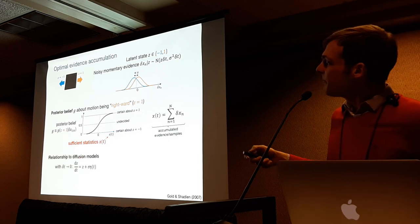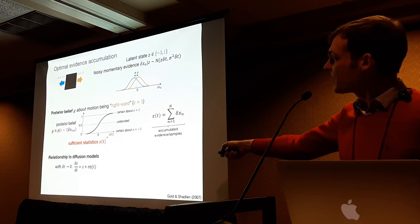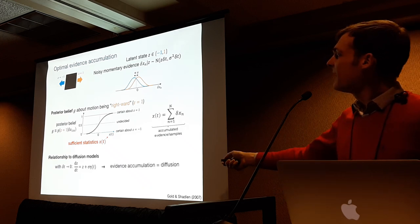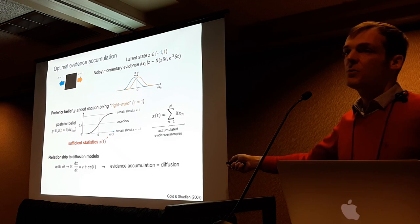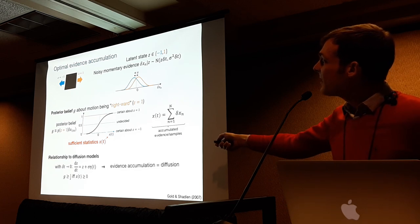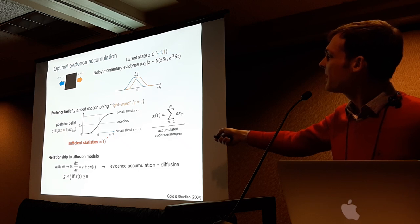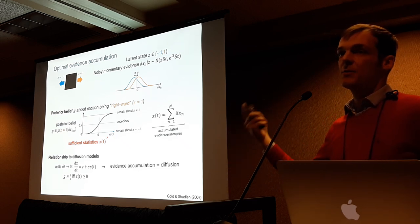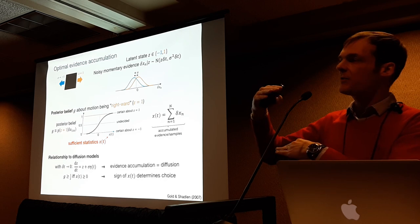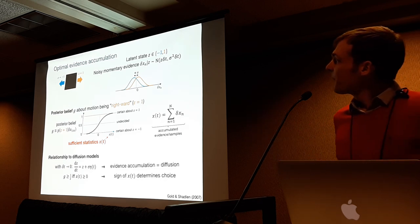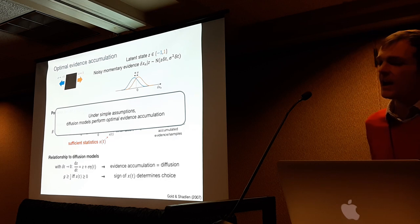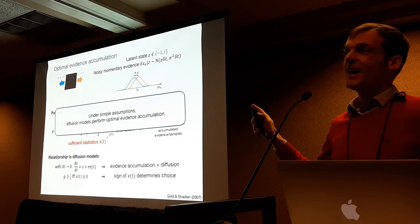How is this linked to diffusion models? If you reduce the time steps to very, very small, this is described by a diffusion model with a drift — which tells us that under these circumstances, evidence accumulation actually corresponds to a drifting Wiener process. The sign of the accumulated evidence allows us to make decisions: if it's positive, rightward motion is more likely; if negative, the other way around. This justifies the two boundaries you place on the drifting and diffusing particle. The bottom line is that under these simple assumptions, diffusion models perform optimal evidence accumulation.